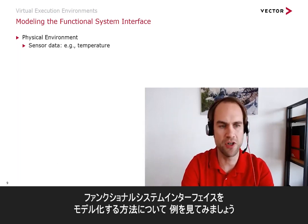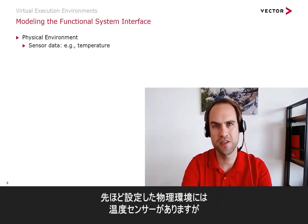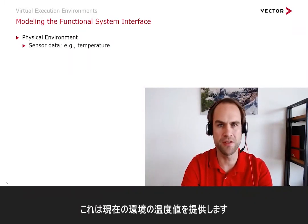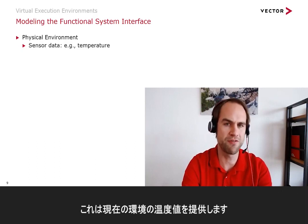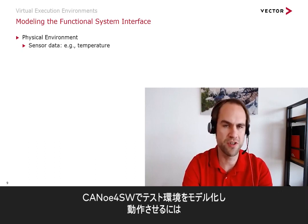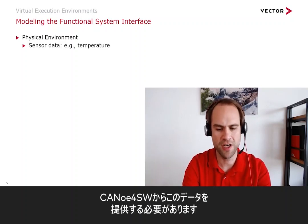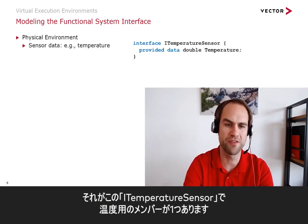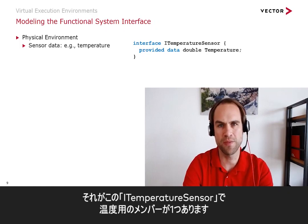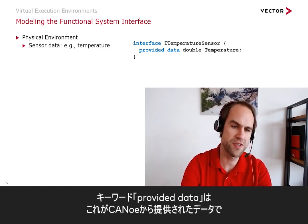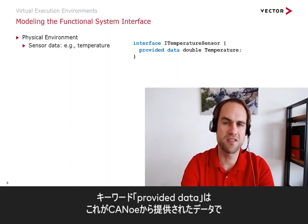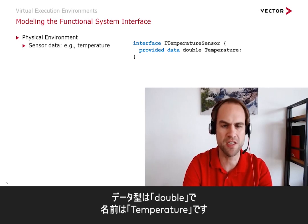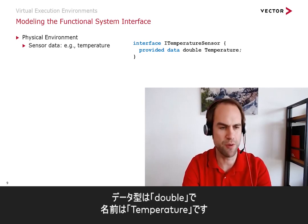Let's have a look at a few examples of how to model functional system interfaces. In the physical environment, we have sensors — for example, a temperature sensor which provides continuous temperature values of our environment. Since we want Canoo for Software to act as our testing environment, we have to provide this data from Canoo for Software. So we declare an interface — here it's called iTemperatureSensor — and it has one member for the temperature. We use the keyword provided data to indicate that this is data provided by Canoo and then becomes available in our SUT. It has a data type of double and a name temperature. Quite simple.